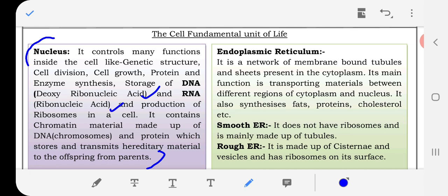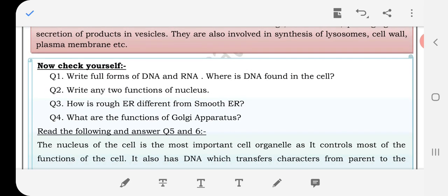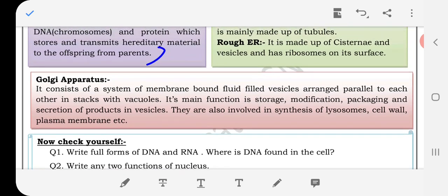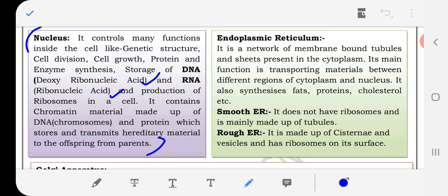How is rough ER different from smooth ER? Smooth ER doesn't have ribosomes and is mainly made up of tubules. Rough ER is made up of cisternae and vesicles and has ribosomes on its surface.